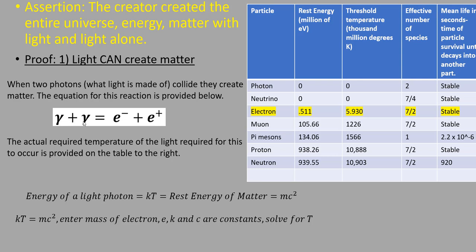A photon collides into a photon and produces an electron and a positron. The electron is matter, the positron is antimatter. The required temperature of the light required for this to occur is provided in this table here. For example, to create an electron requires photons at a temperature of 5.9 thousand million degrees.